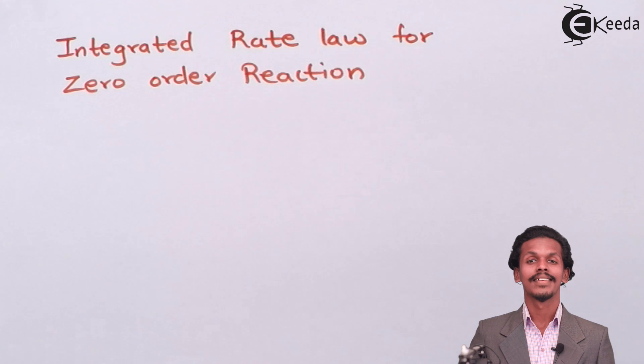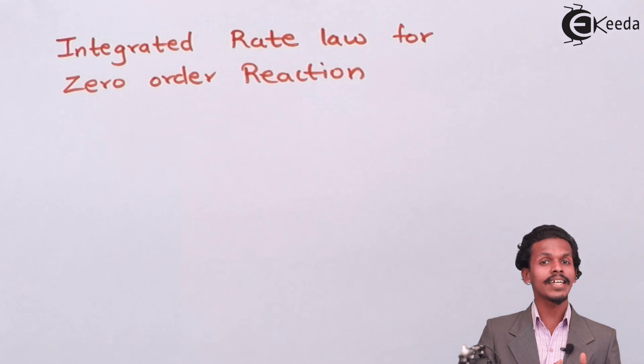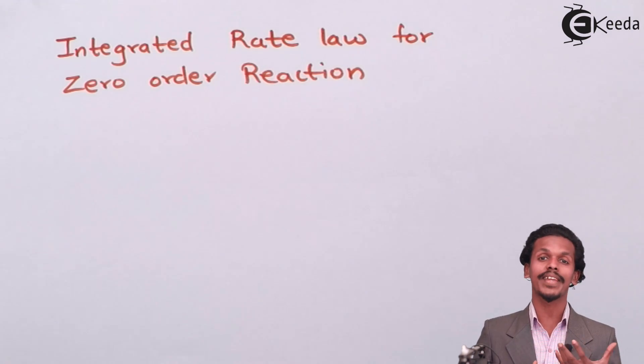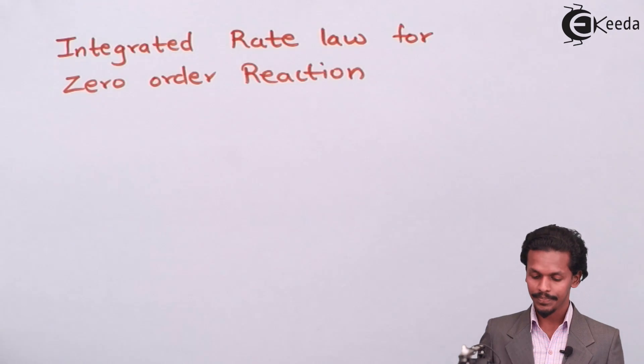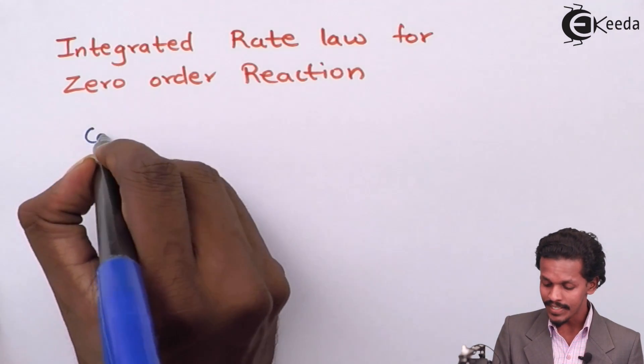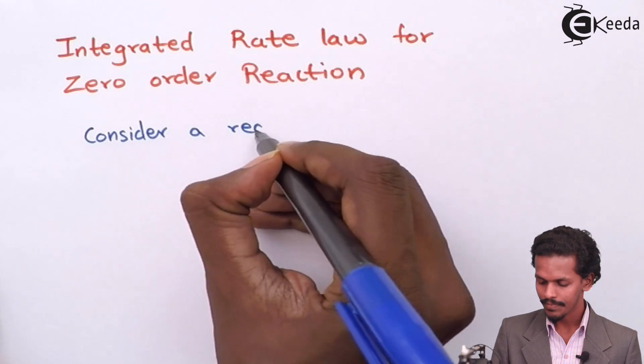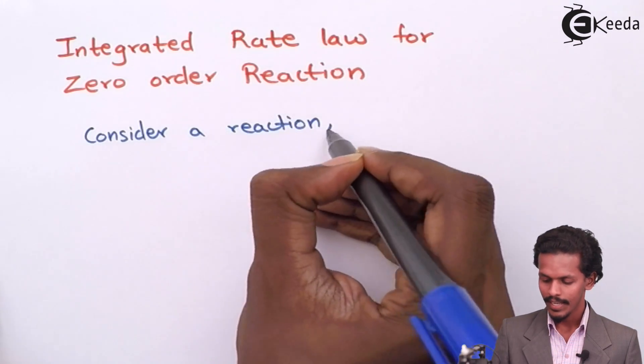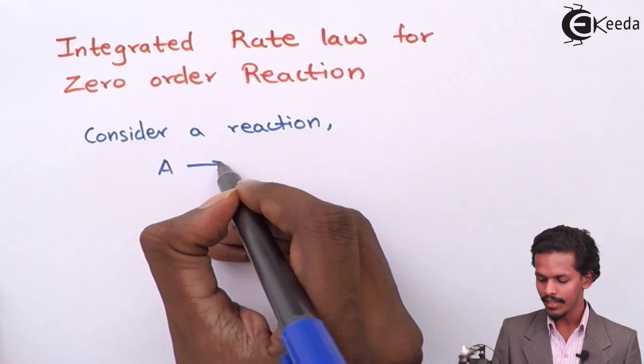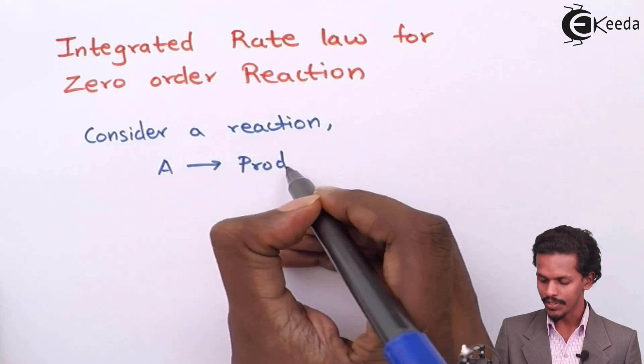Let us see how we can derive it. As we know that the reactant gives us product, and as time increases the concentration of reactant decreases. For that, I would consider the reactant A which is giving me the product. So I am considering a reaction in which A is giving me product.